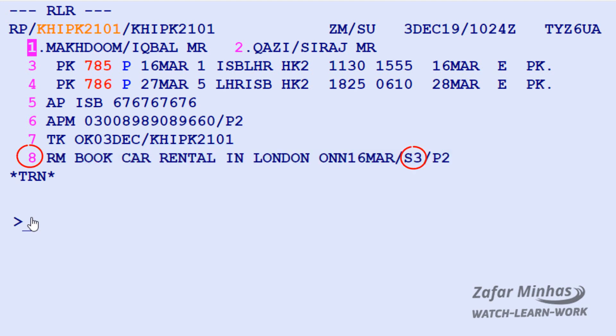To disassociate a remark element from a segment, you would enter: element 8, slash S (segment identifier), then enter.